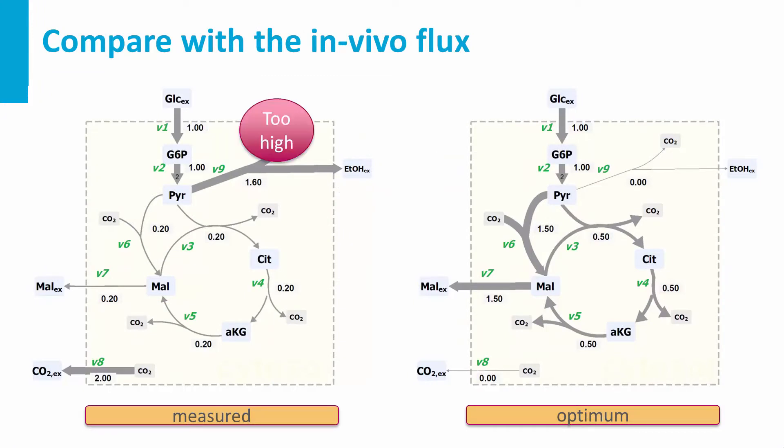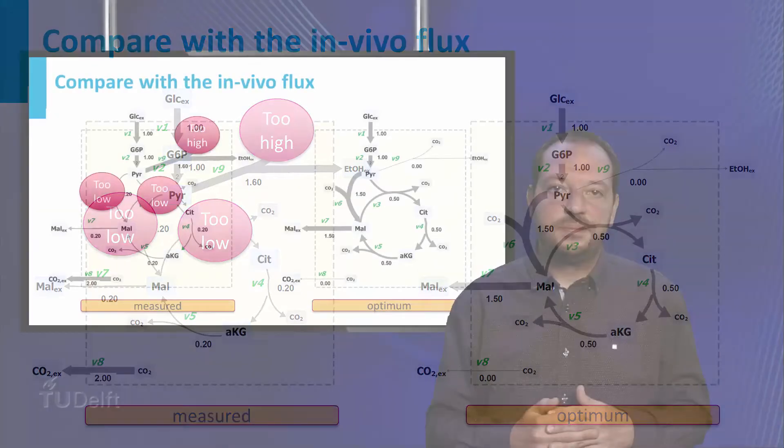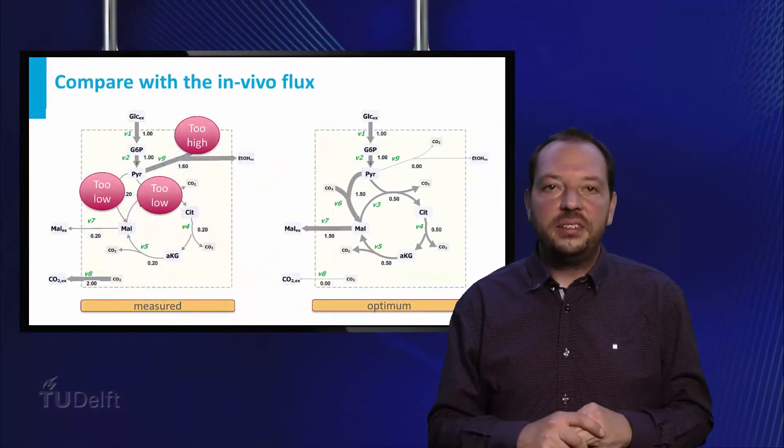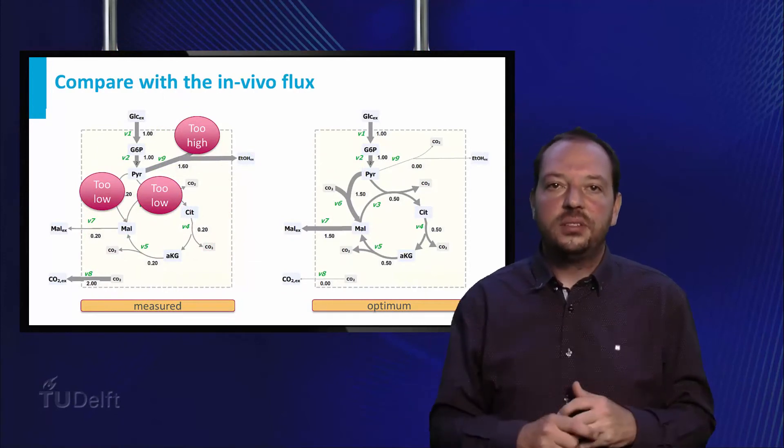Thus the next step should be a further down regulation of V9, as well as the upregulation of V3 and potentially V6. I hope this example has given you an idea how network analysis can guide you through the process of strain optimization.